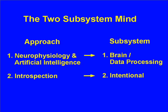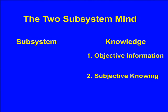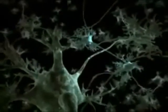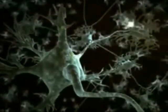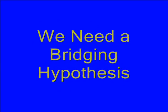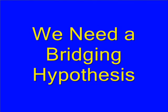Only by considering both kinds of data is there any possibility of an adequate model of mind. Similarly, the two-subsystem mind mirrors the two poles in the subject-object relationship of knowing. The objective contents we know are encoded in the brain, while the intentional subsystem is at the core of our subjectivity. We have a mind in which neurons and astrocytes process data, and in which our intentional subsystem is aware of a subset of the processed contents. Here we need a bridging hypothesis, which neuroscience is slowly building — its function is to specify what kind of neural processing makes contents available to awareness.